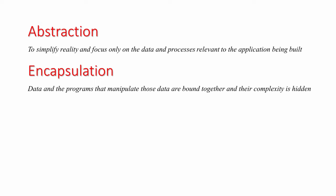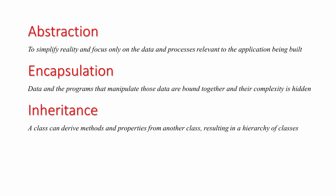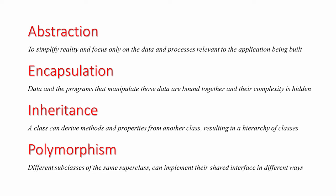To recap the fundamental concepts of object-oriented programming: Abstraction means to simplify reality and focus only on the data and processes that are relevant to the application being built. Encapsulation means that data and the programs that manipulate those data are bound together and their complexity is hidden. Inheritance means that a class can derive its methods and properties from another class, which might result in an extensive hierarchy of superclasses and subclasses. Polymorphism means that different subclasses of the same superclass, which therefore share the same interface, can implement those interfaces in their own ways by overriding the code of the methods they inherit.